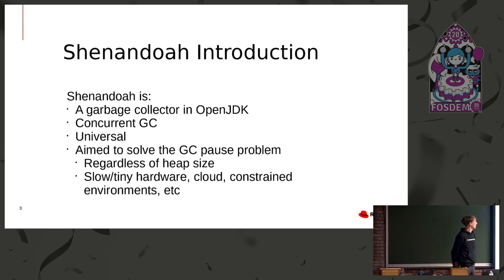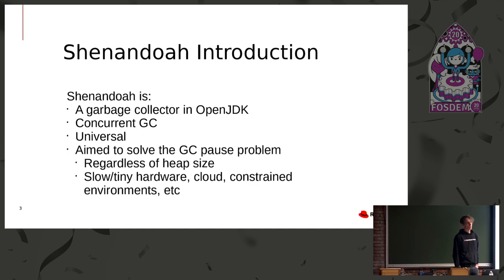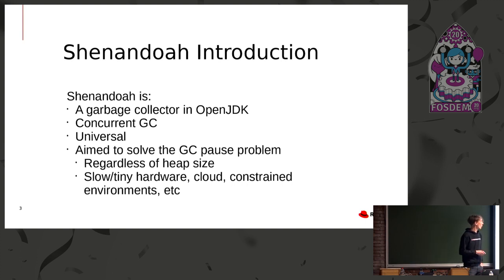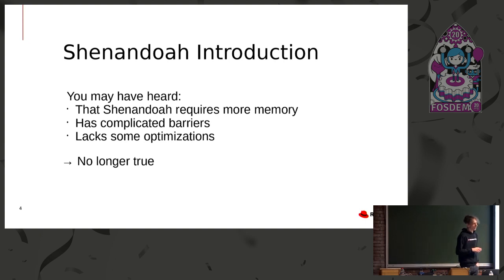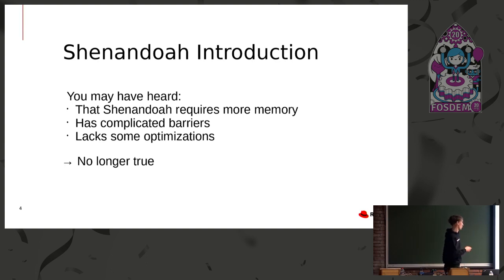The aim is to solve the GC pause problem — what we achieve is GC pauses in the range of a millisecond or so, regardless of heap size, and it can work very well in constrained environments. You may have heard that Shenandoah requires more memory than other garbage collectors, that the barriers are rather complicated and hard to optimize, and that we lacked some optimizations possible with other GCs. That is no longer true, and I want to show you why.